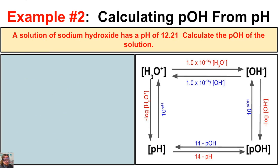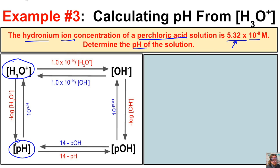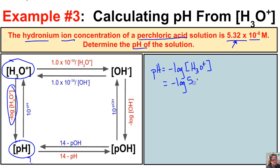In this third example, the hydronium ion concentration of a perchloric acid solution — keep in mind perchloric acid is a strong acid — is 5.32 times 10 to the negative 8 molar, and we want to determine the pH. To get the pH, we simply take the negative log of our hydronium ion concentration. So we take the negative log of 5.32 times 10 to the negative 8, and we end up with a pH of 7.27.